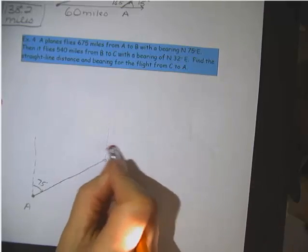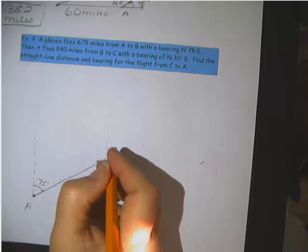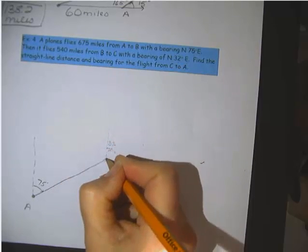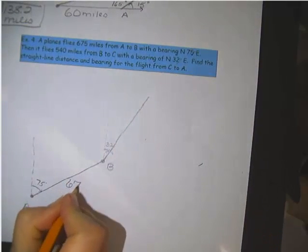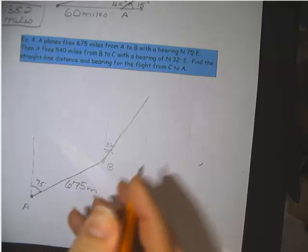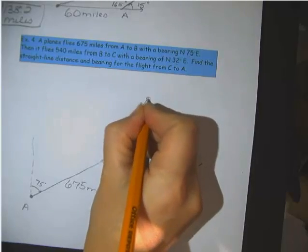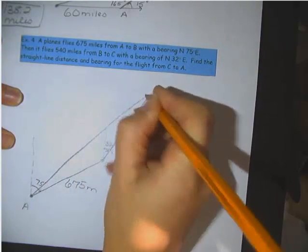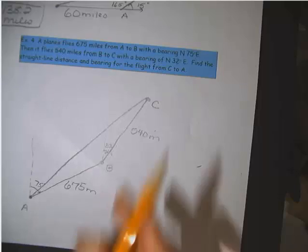So from that direction we were going, we're turning to a bearing of east 32 degrees from north. So go from north. Of course, I need to make sure that that is smaller than my 75 degrees. 32 degrees. And so there we go, towards C. So it was 675 miles to B and 540 miles to C. So there's our triangle. Crazy obtuse triangle.